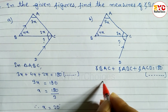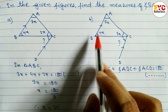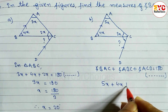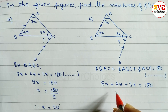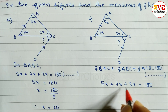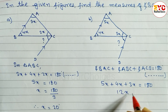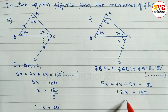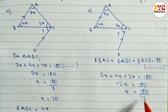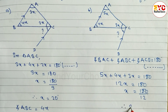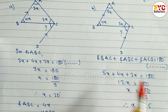Angle BAC is 5x, angle ABC is 4x, and angle ACB is 3x. So: 5x + 4x + 3x = 180 degrees. Adding: 5 + 4 + 3 = 12, giving 12x = 180. Dividing: x = 180 ÷ 12 = 15. Therefore x = 15.